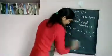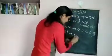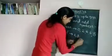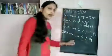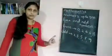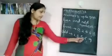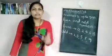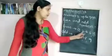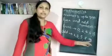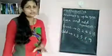So the numbers like 1, 3, 5, 7, and 9 are odd numbers. Even numbers are 0, 2, 4, 6, 8 and odd numbers are 1, 3, 5, 7, 9.